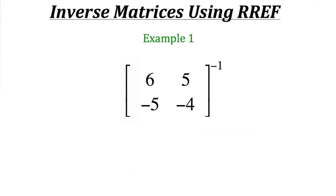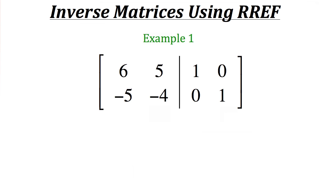Now let's look at another method for finding the inverse of a matrix using an augmented matrix. For the 2×2 matrix with elements 6, 5, negative 5, and negative 4, we place our matrix on the left side of the augmented matrix and a 2×2 identity matrix on the right side. We then perform row operations to put the augmented matrix into reduced row echelon form.